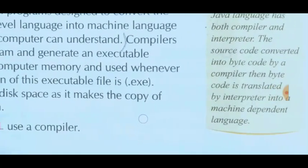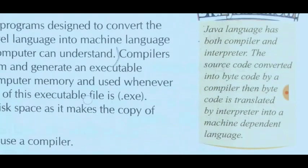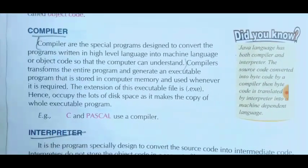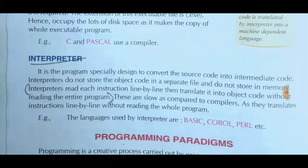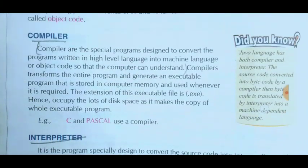An important point to keep in mind: Java language has both a compiler and an interpreter. The source code is converted into bytecode by the compiler, and then the bytecode is translated by the interpreter into a machine dependent language. This is a very important point to remember.